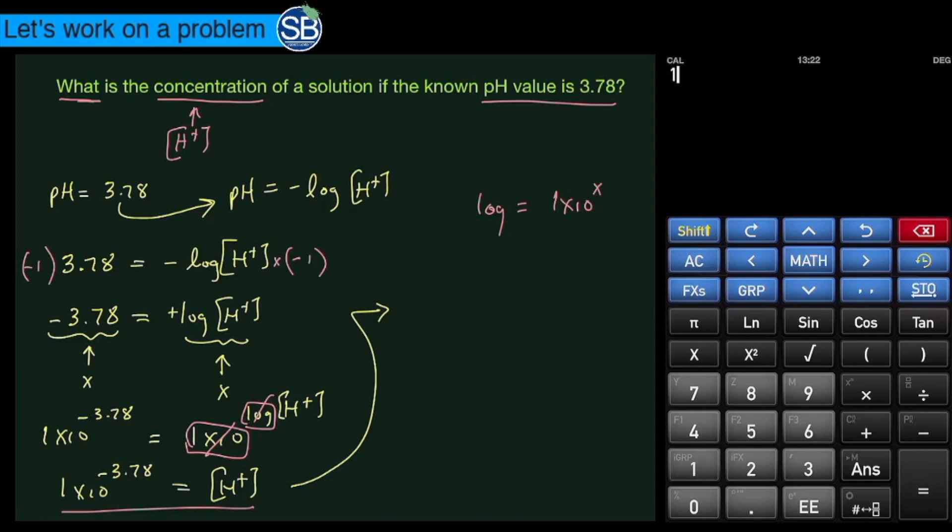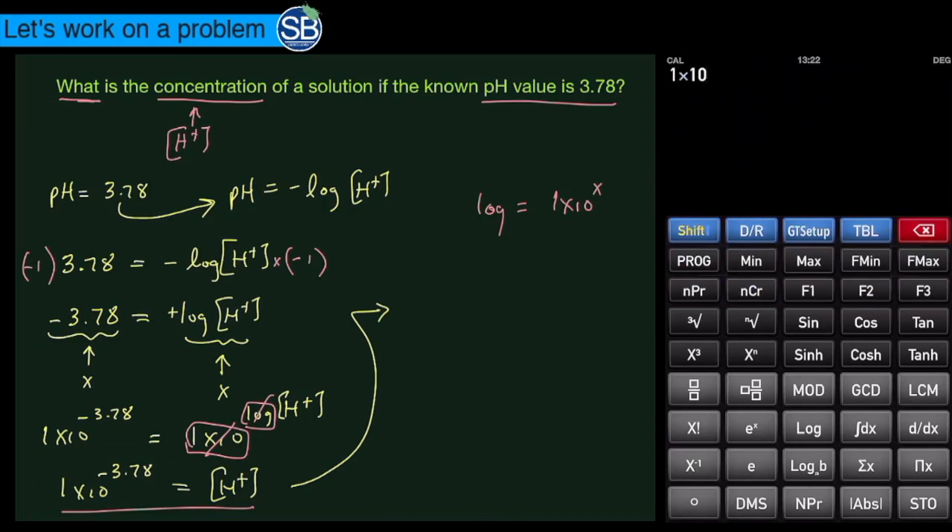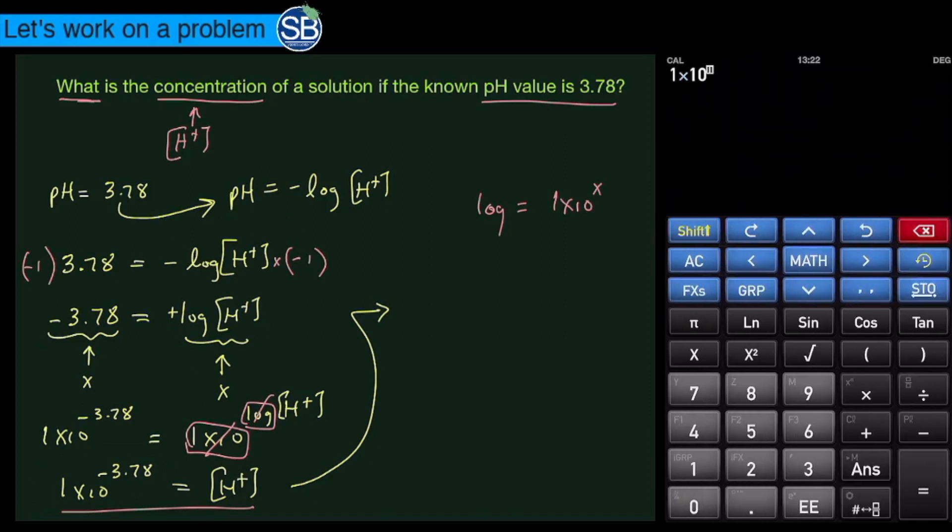We're going to plug it in - we're going to write 1 times 10, and then we're going to raise it. On my calculator we're going to use the x to the n power, and so that gives me a little block up top. Then we're going to plug in the value which is negative 3.78.